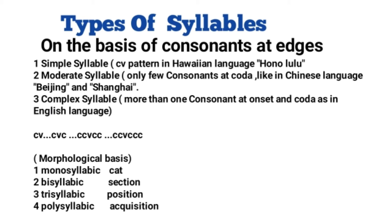The second type is a moderate syllable. Some languages allow only a few consonants at the coda position. For example, in the Chinese language, consider the words 'Beijing' and 'Shanghai' — only a few consonants appear at the coda level.